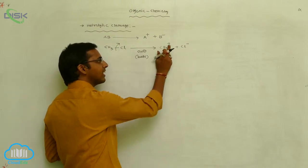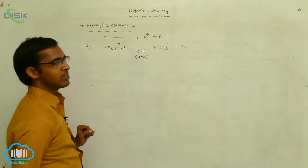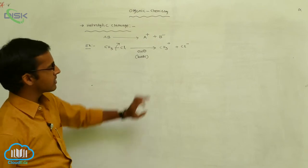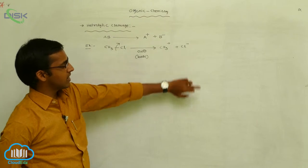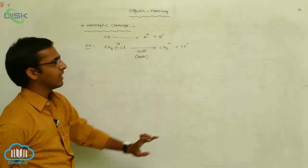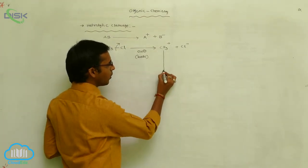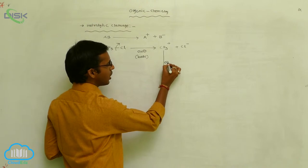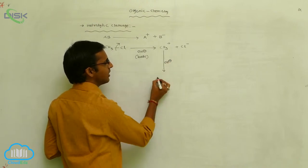These cations, generally in organic chemistry, the cations interact with anions — cations react with anions, and anions react with cations. So when you have the addition of basic medium OH⁻, it gives CH3OH.